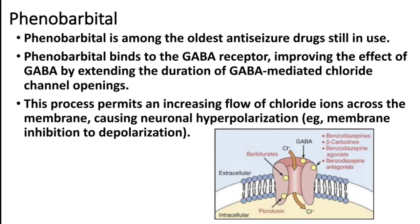This results in membrane inhibition to depolarization. It is a CNS sedative drug. Whenever there is a seizure, we know it is a hyperactivity of CNS cells. Phenobarbitone reduces the activity of neurons by binding to the GABA receptor.